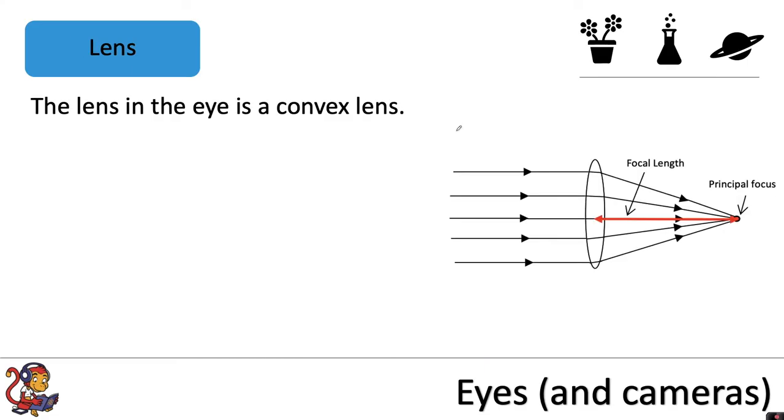The lens in the eye is a convex lens and that is this shape where it bends out either side. Like here this is very similar to the lens in the eye. That can change thickness, it could go round or thin depending on how it's controlled by those ciliary muscles and suspensory ligaments.